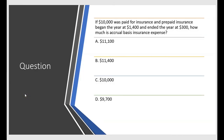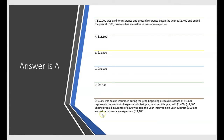Now let's look at what happens when the prepaid expense account goes down. $10,000 was paid for insurance, prepaid insurance began the year at $1,400 and ended the year at $300. Prepaid insurance fell by $1,100. The beginning prepaid insurance of $1,400 was paid last year and incurred this year — add $1,400, up to $11,400. The ending prepaid insurance of $300 was paid this year and incurred next year — subtract $300. Accrual basis insurance expense is $11,100, answer choice A.